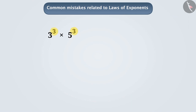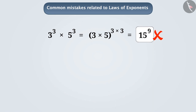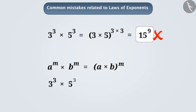Similarly, children also make a mistake in multiplication of numbers with the same exponents. For example, when multiplying 3 to the power of 3 by 5 to the power of 3, children multiply the bases to get 15, and then multiply the exponents to get 9, giving the wrong answer of 15 to the power of 9. The correct understanding is that a to the power of m multiplied by b to the power of m is equal to a multiplied by b, to the power of m. Therefore, 3 to the power of 3 multiplied by 5 to the power of 3 is equal to 3 multiplied by 5 to the power of 3, which is equal to 15 to the power of 3, which is the correct answer.